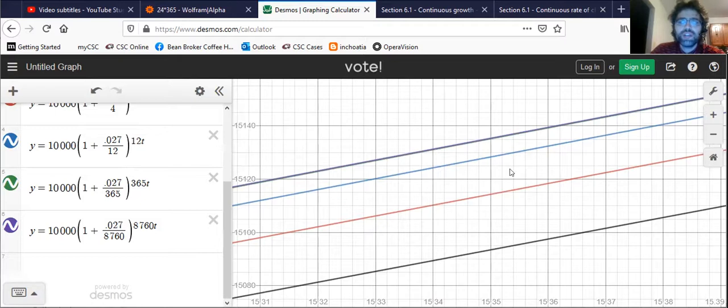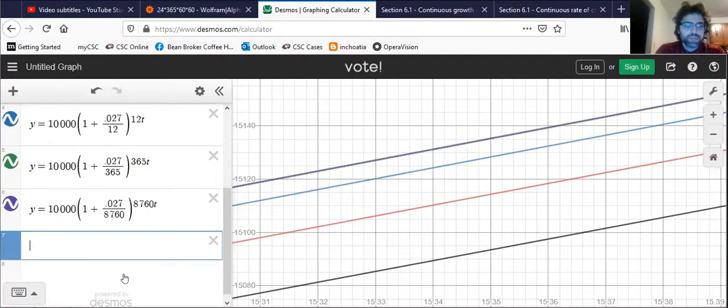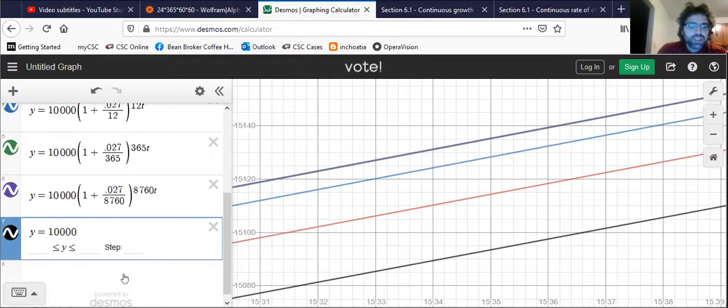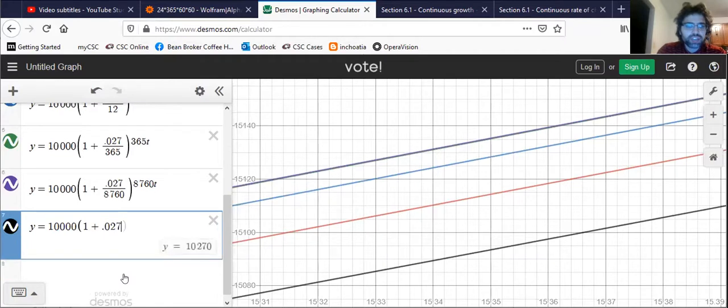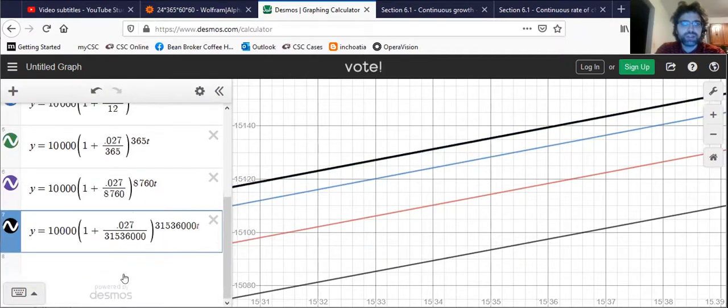What if instead of compounding every hour, we compound every second? Okay, let's type that in. Here are the seconds in a year. Again, I mean, we can't even really see a difference.